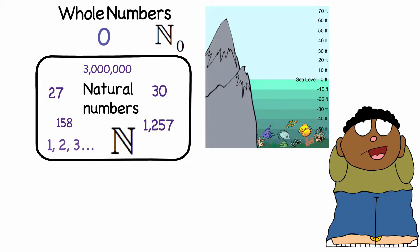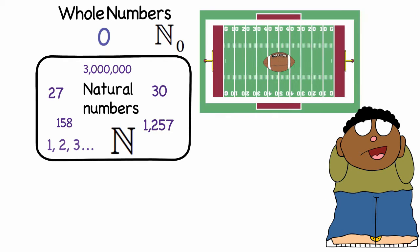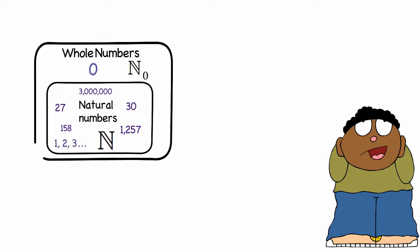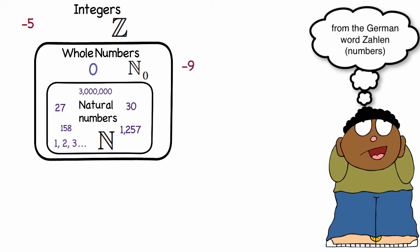Negatives are also used when we talk about objects below sea level. Those fish are about 50 feet below sea level. When we're looking at a football game, when someone loses 5 yards, he moved negative 5 yards. When we include negative numbers with the whole numbers, they're called integers, and we use the double-struck Z to represent them.